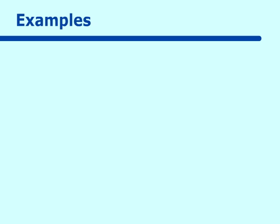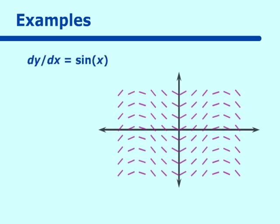Here's an example: dy/dx is equal to sine x, and you see the graph of the slope field. Now the slope field itself is really the graph of the anti-derivative of sine x, which is negative cosine x. But as you look at the slope field, there are many negative cosine x's in here. And if I pick out just one of these and follow the slopes along, I will get the graph of a particular solution to my derivative.